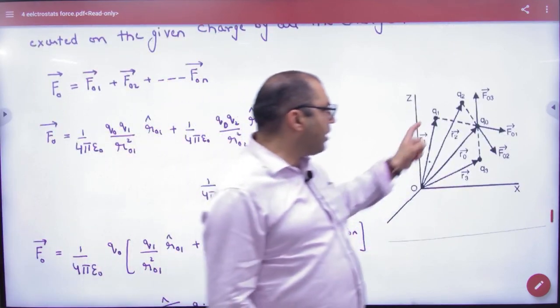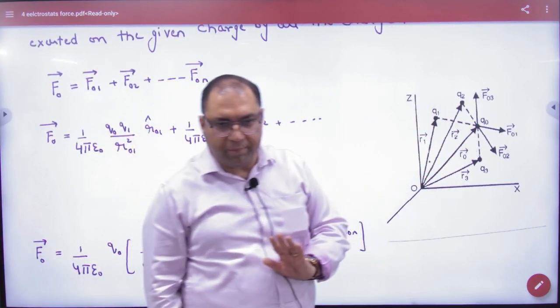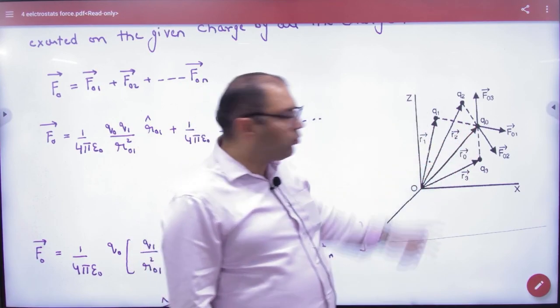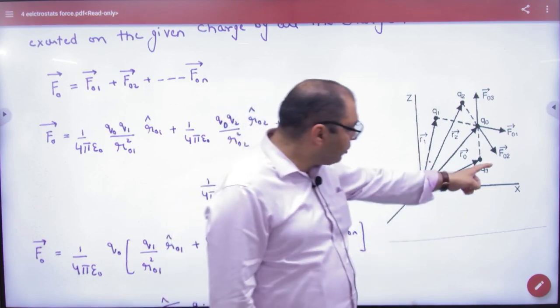If you have a lot of charges like q1, q2, q3, q4, think that the position of q0 is R0, q1 is R1, q2 is R2, q3 is R3.